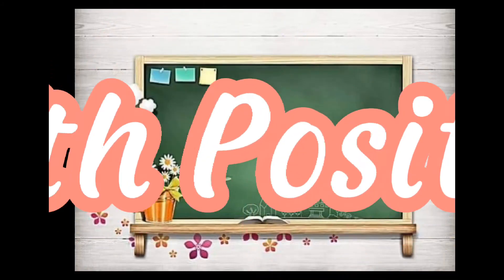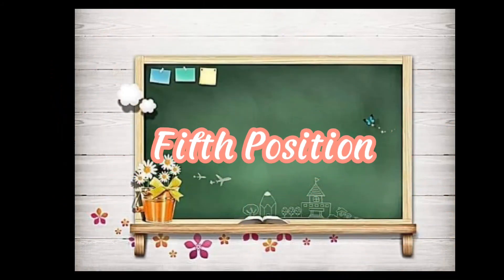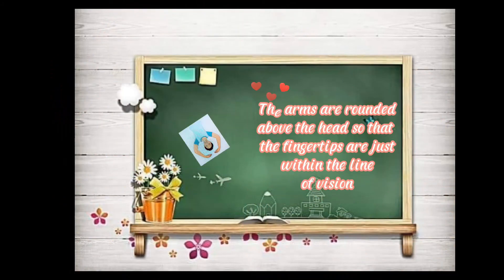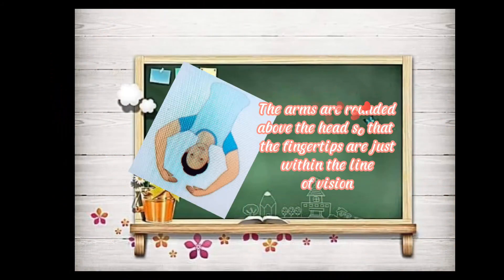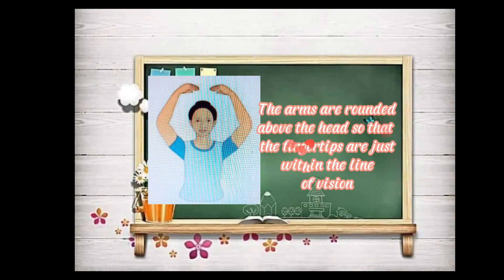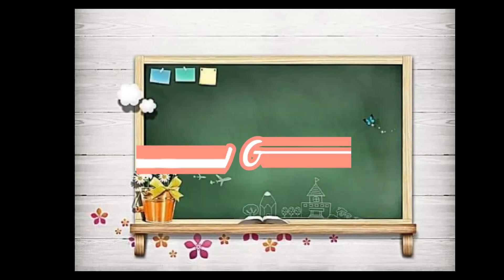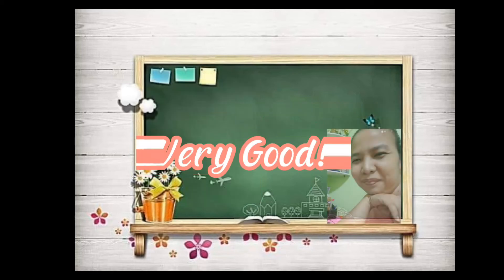Fifth position: the arms are rounded above the head overhead, so that the fingertips are just within the line of vision. Very good, children.